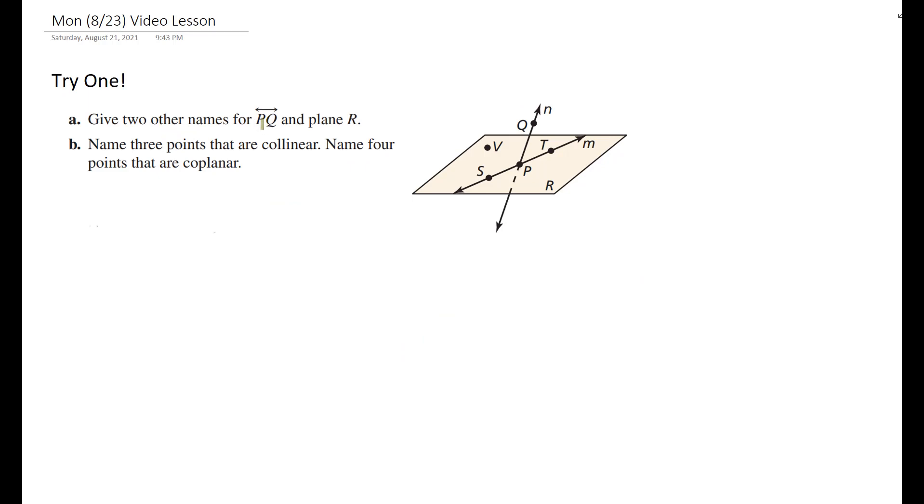Give two other names for line PQ and plane R. Line PQ is the line that contains points P and Q. Line PQ can also be known as line QP, because a line extends infinitely in both directions. So the order does not matter. There's also an N next to the line that indicates we can also label the line as line N. That letter is lowercase. It is not a point and sometimes is italicized.